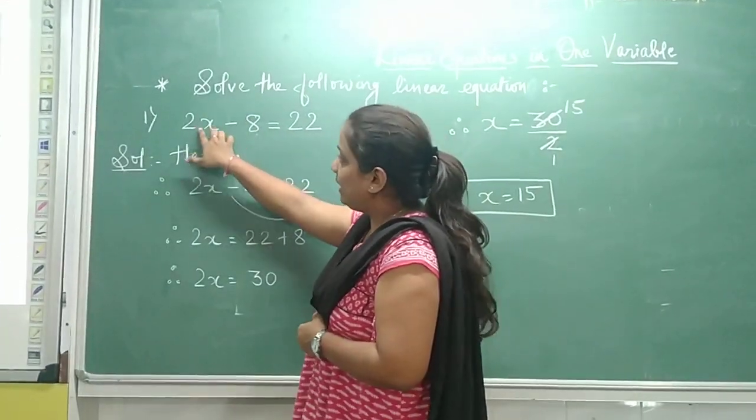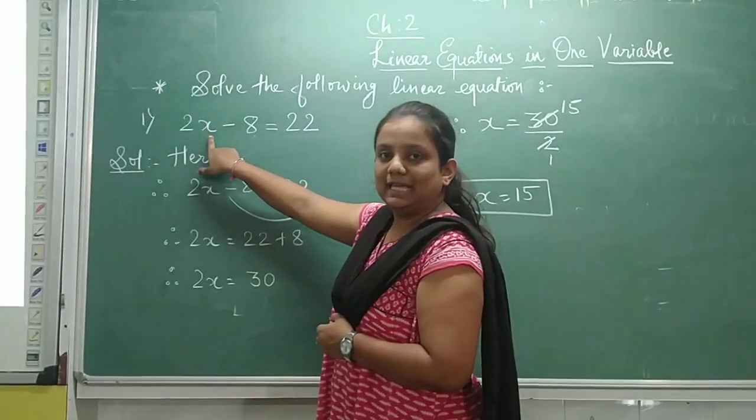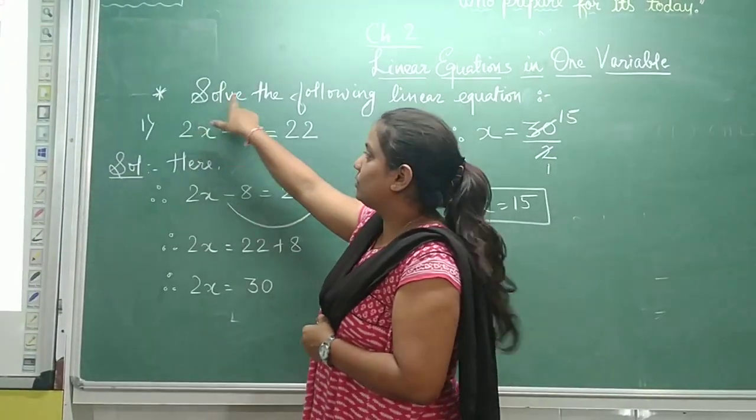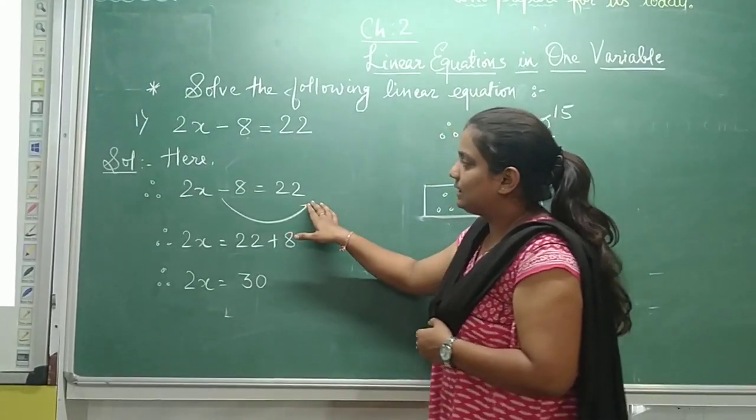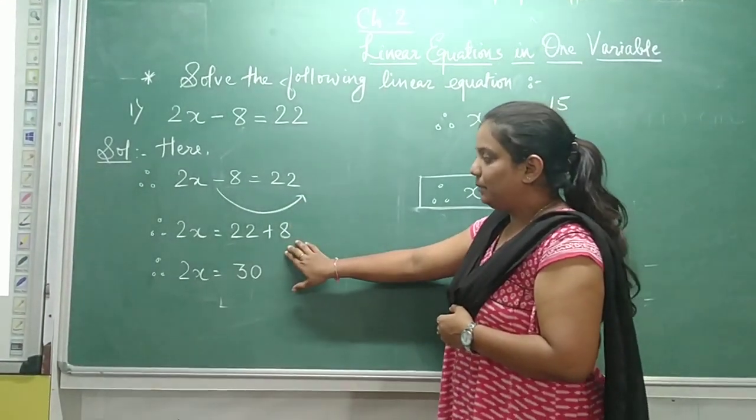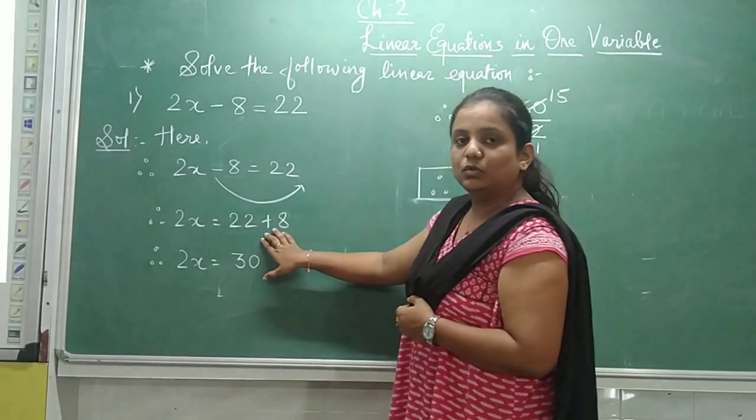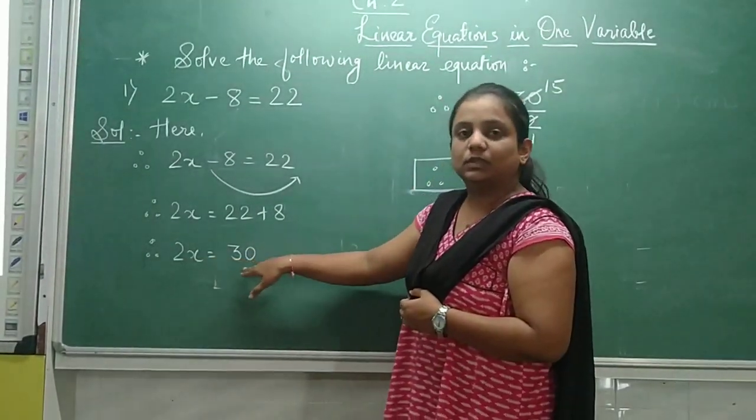We need to find out the value of this unknown variable x. So to find out the value of x, we need to transfer this 8 on the other side by applying the arithmetic operation. So that turns into plus 8, which gives 2x equals to 30.